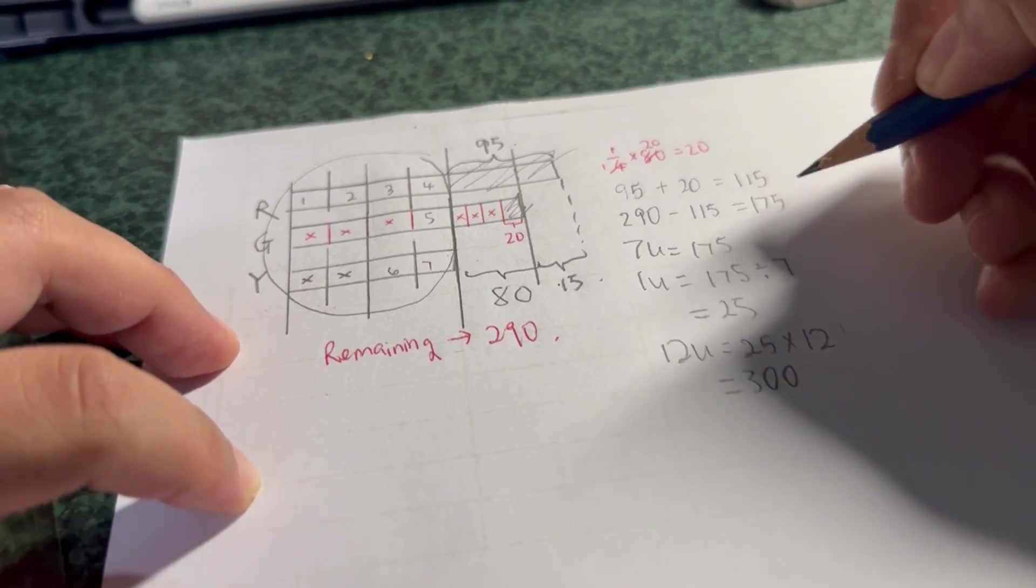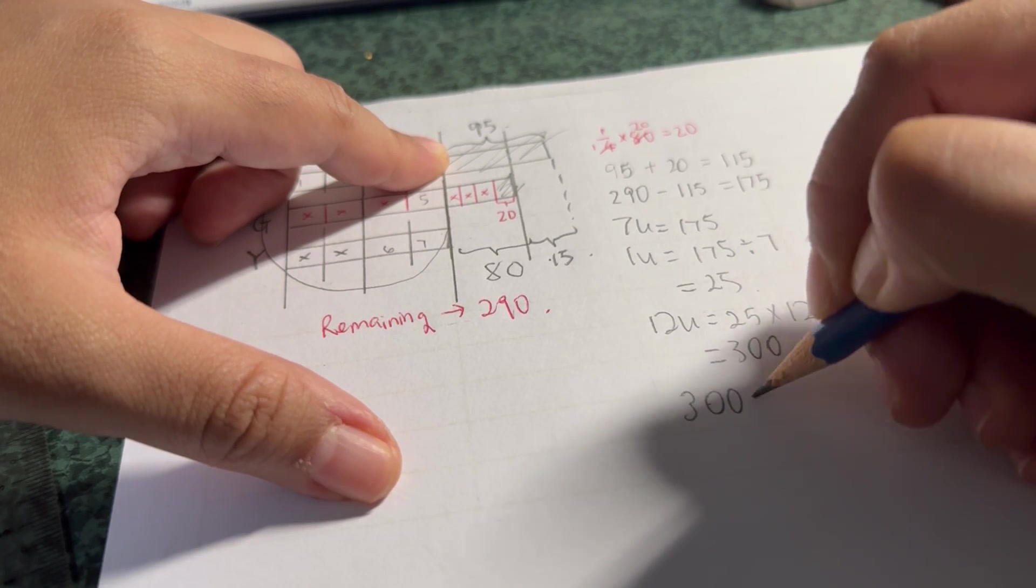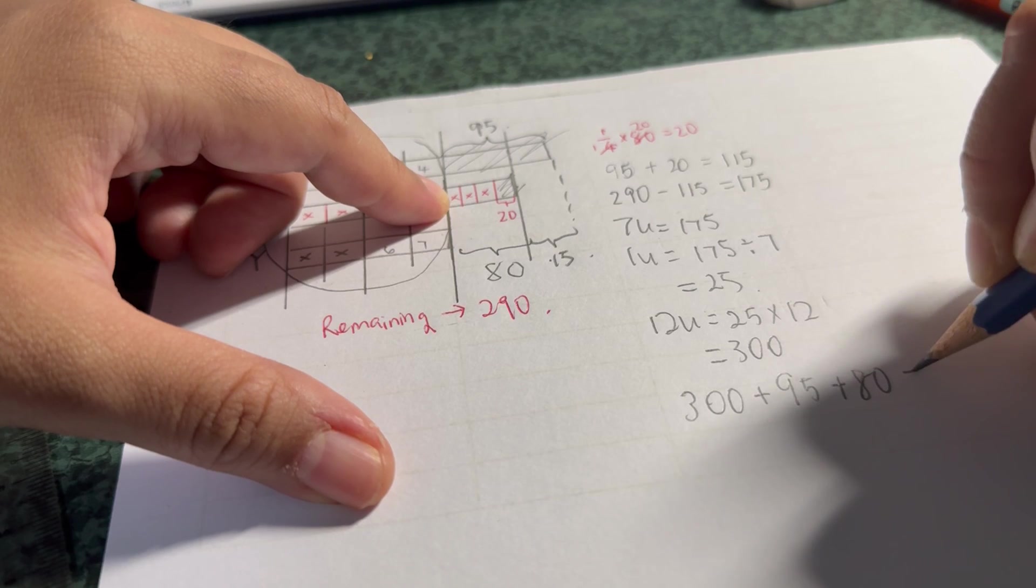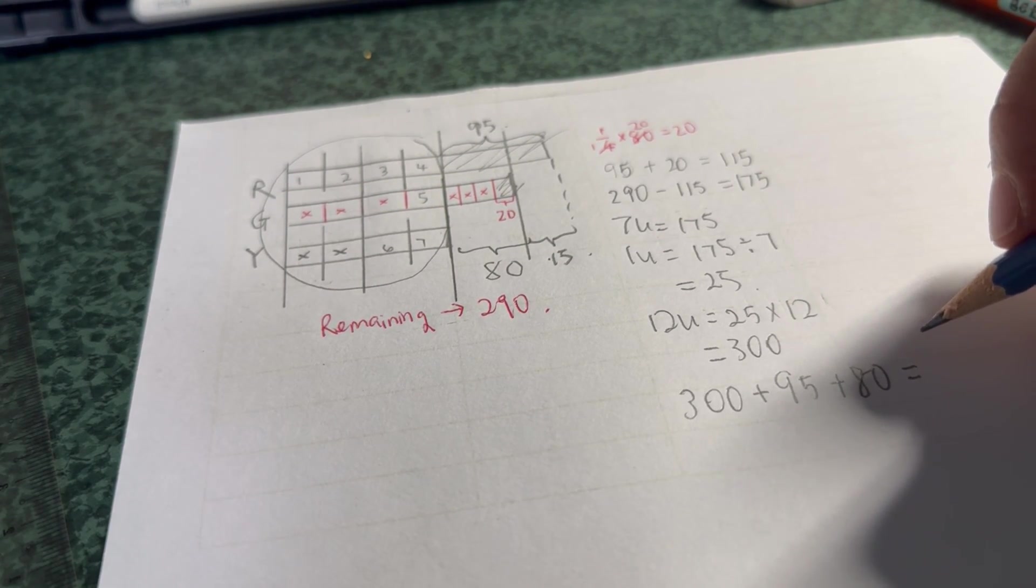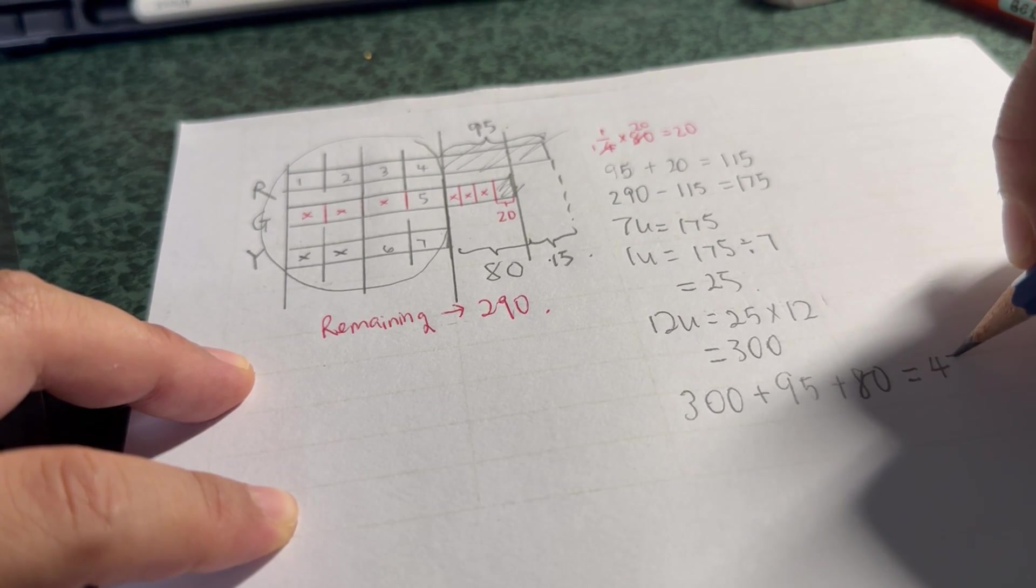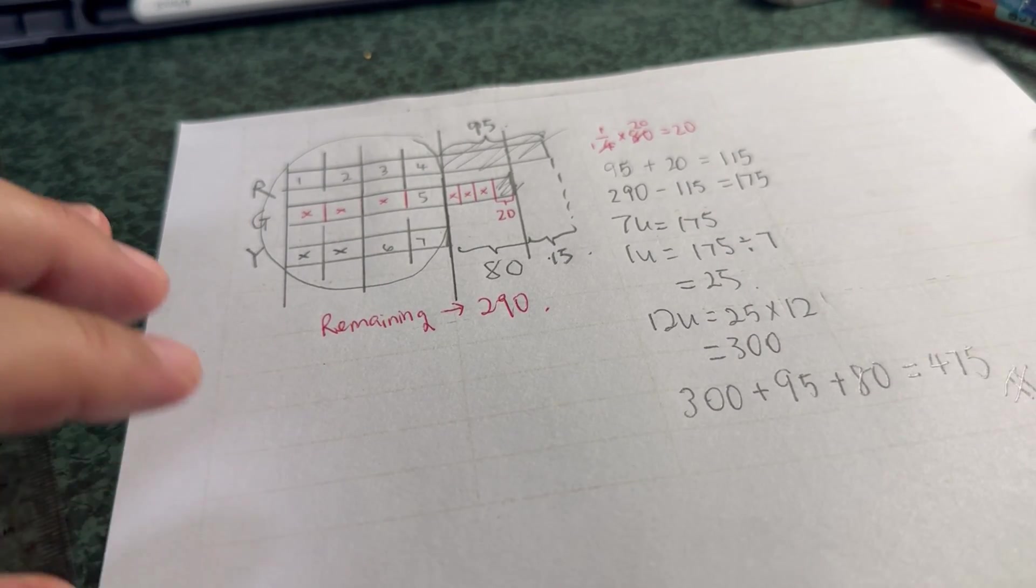And 300, I just have to add 300 plus 95 plus 80, which is equals to 475. That's my final answer. Got it.